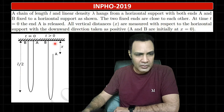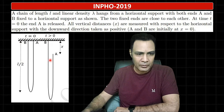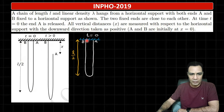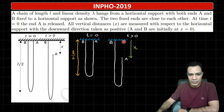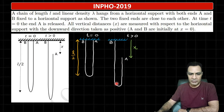There are five or six parts to this question. Let me first explain what is happening. Initially this is the chain — both ends are on the same horizontal level and very close together. The total length of the chain is L. So now at t equals 0, end A is released, and after some time end A has fallen a distance x as shown in the second diagram.